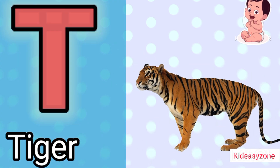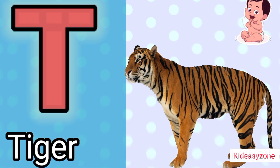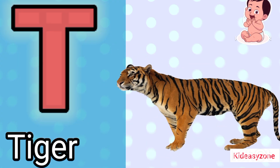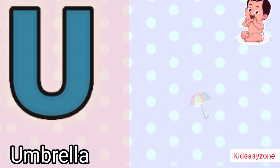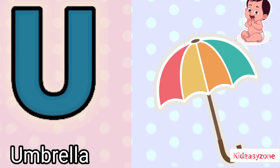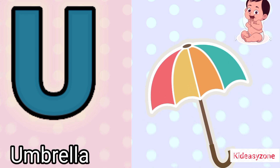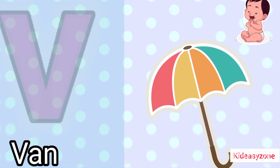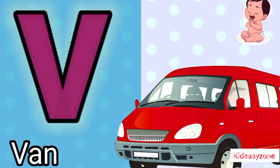T is for tiger. U is for umbrella. B is for van.